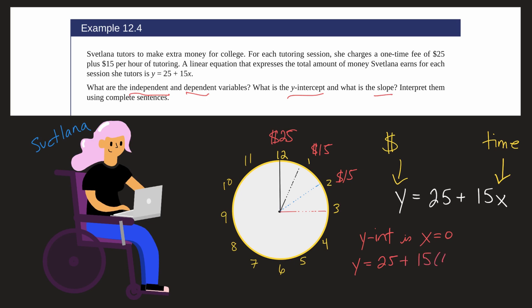So 15 times zero is zero. So y equals 25. So the y-intercept is zero for x and 25 for y. And that is where the line crosses the y-intercept.